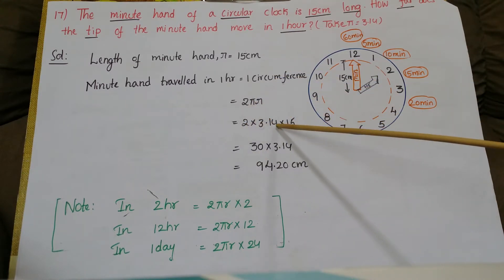So 2 into here, pi is 3.14, into r is nothing but the length of the minute hand, so 15. Then 2 times 15 is 30 into 3.14. 30 into 3.14 is 94.20 centimeters. So the minute hand traveled in one hour 94.20 centimeters, it travels.